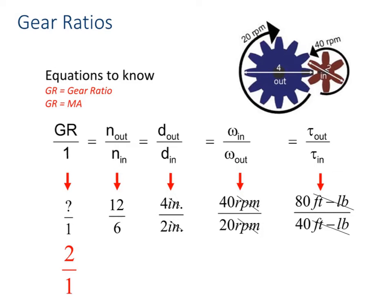But notice with torque being out over in, your angular velocity is opposite. We trade torque for speed.